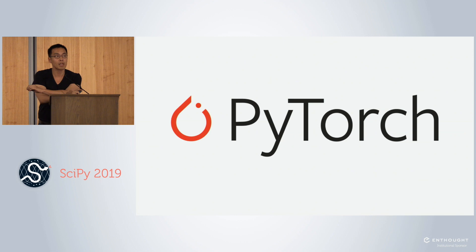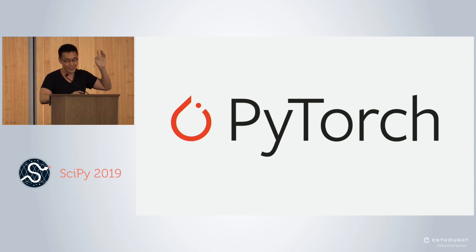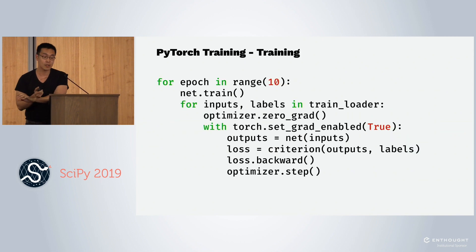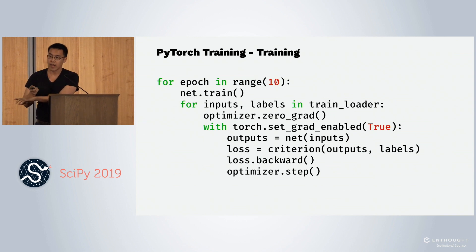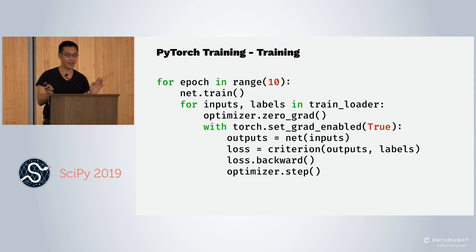If you only want to train a neural network with just PyTorch, it's really simple. All you have to do is go through epochs, go through your data, do a forward prop, calculate your loss, go through a back prop, and then update your weights. Easy peasy.